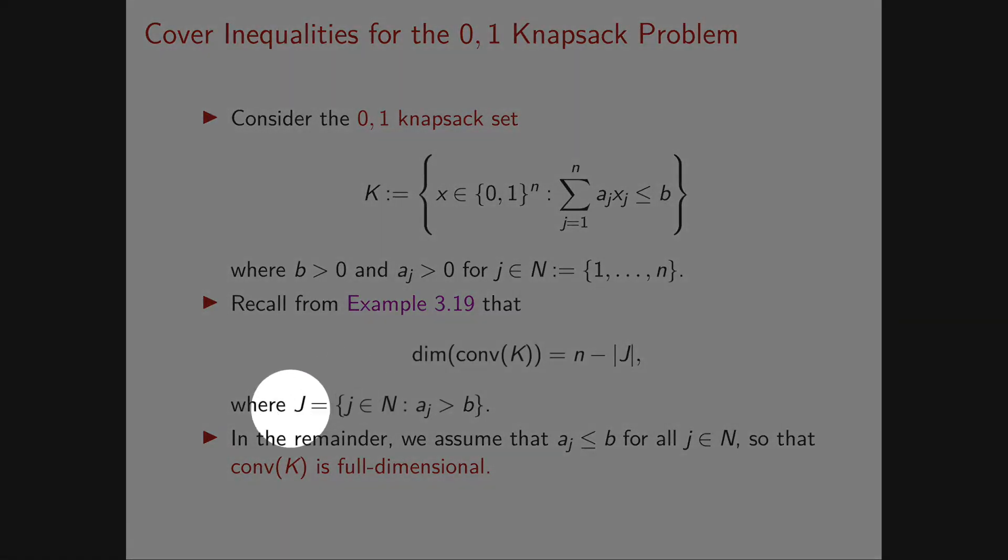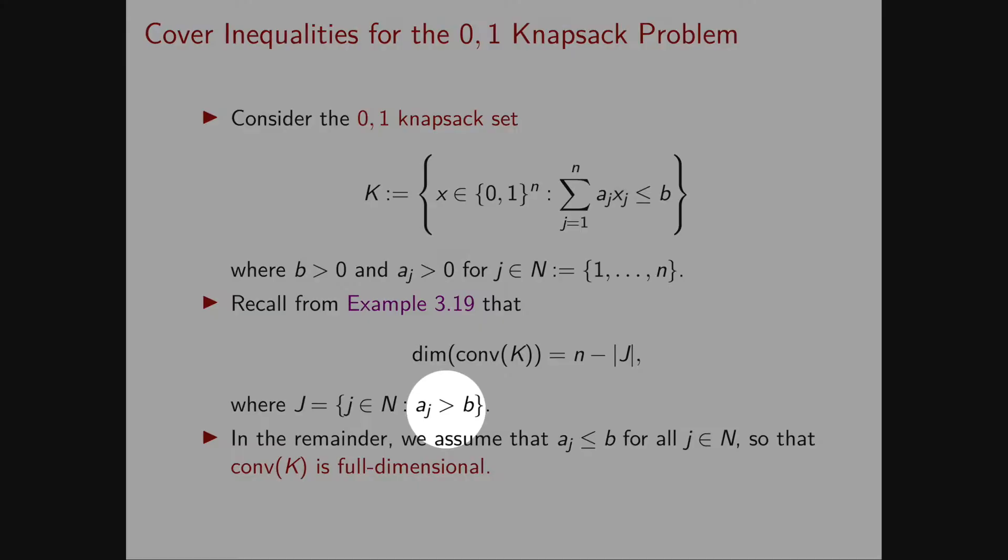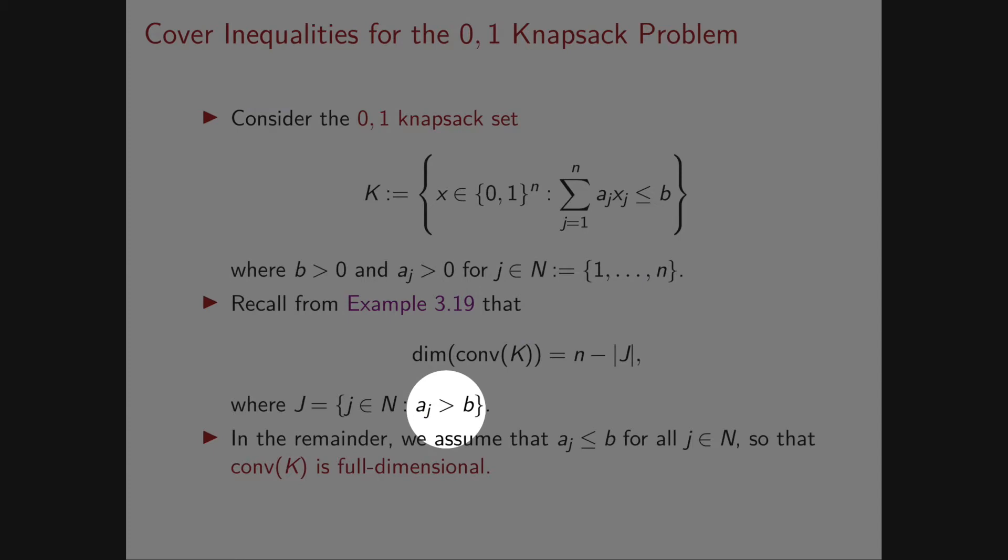The set J contains exactly the items, or the indices in N, whose weight is strictly larger than our weight limit of the knapsack.